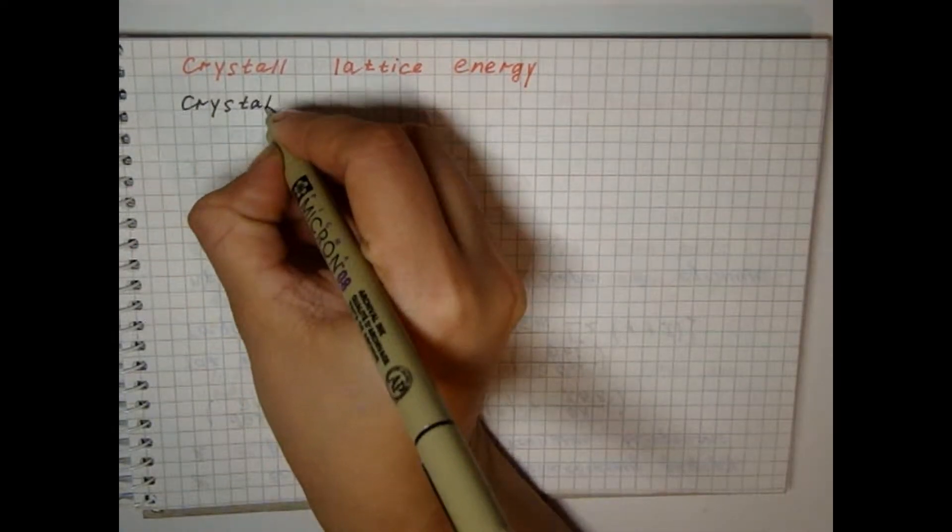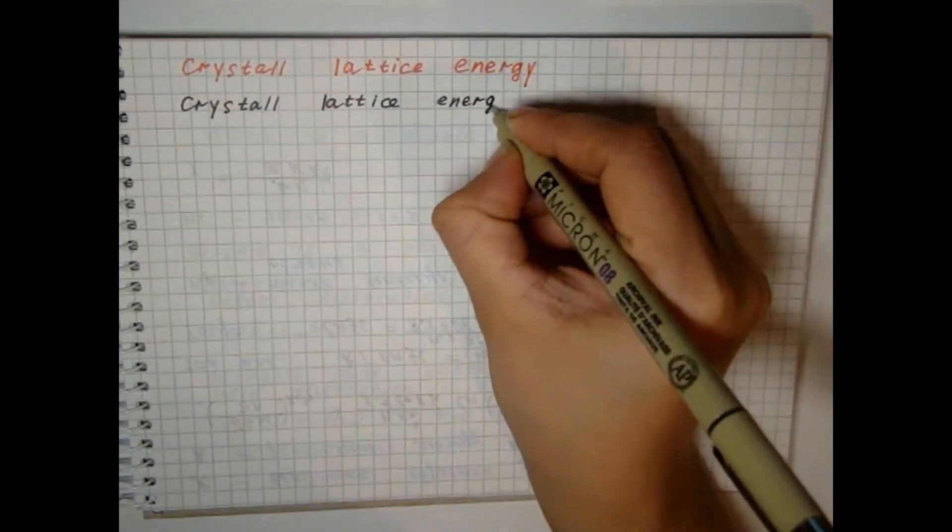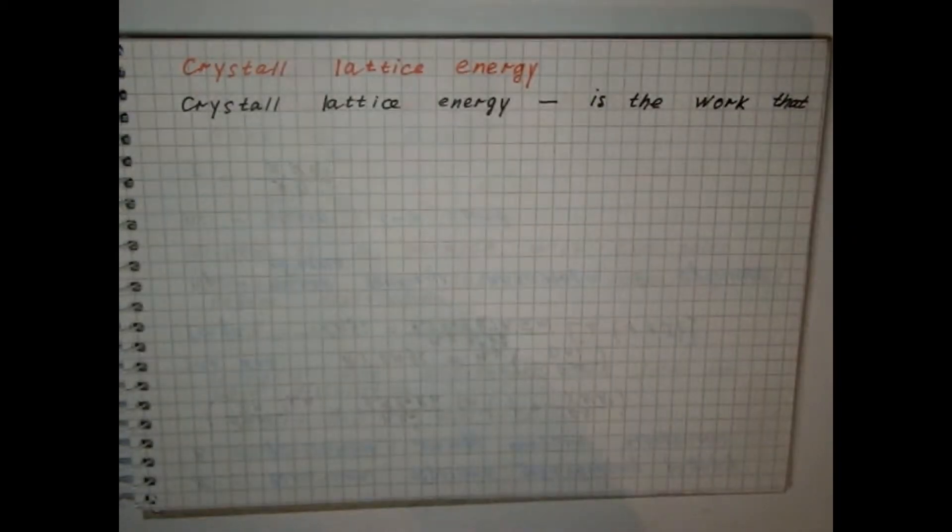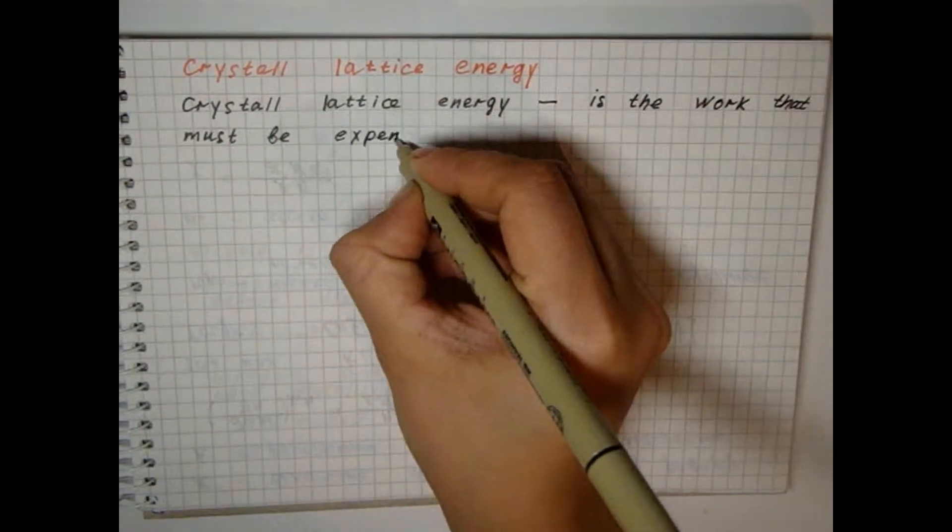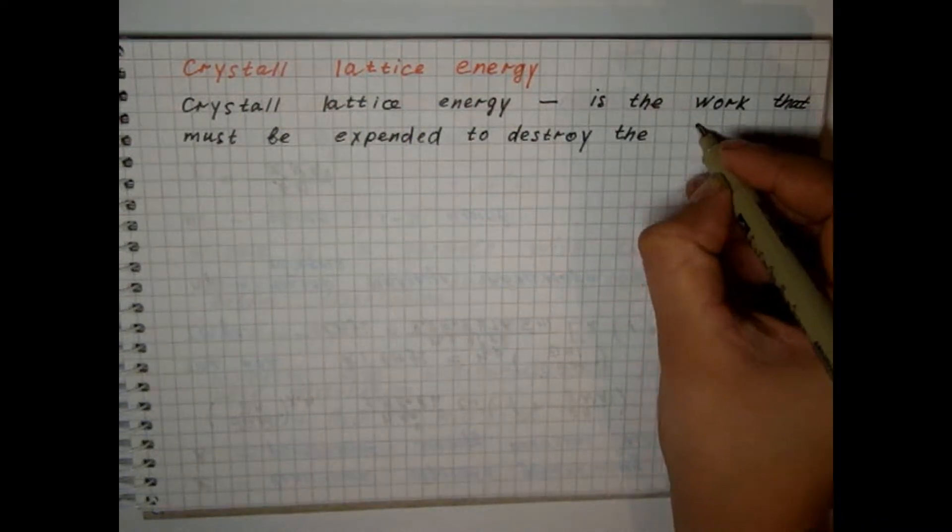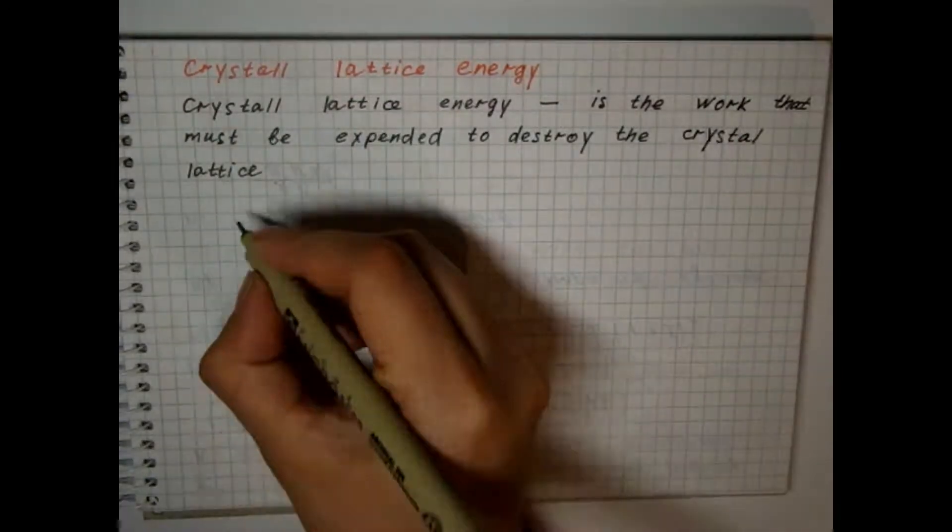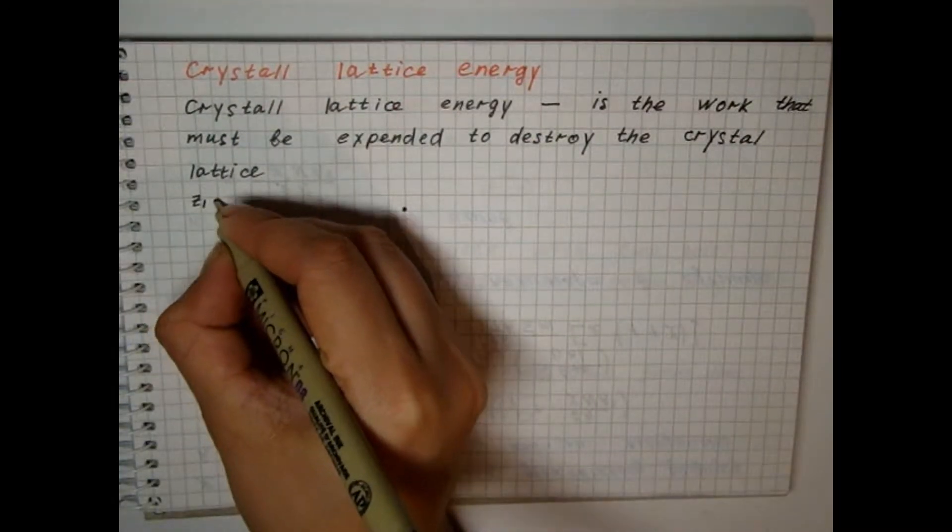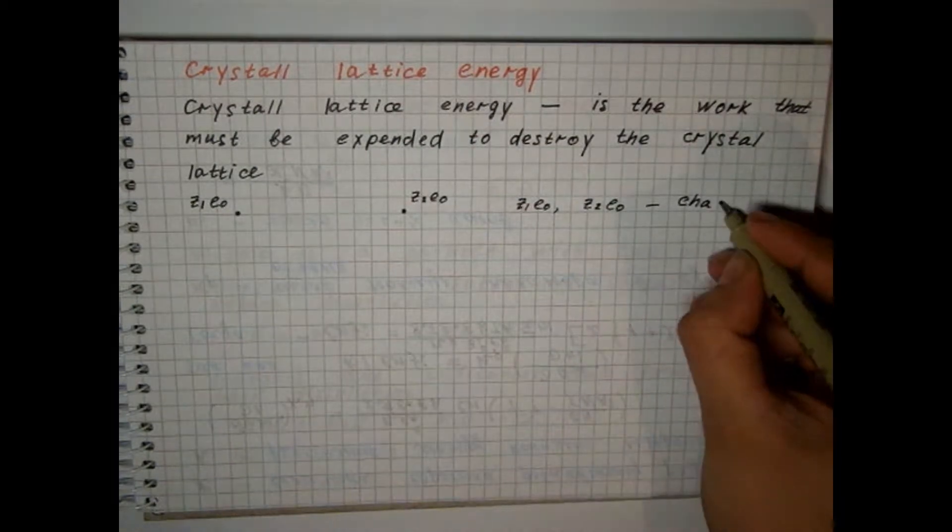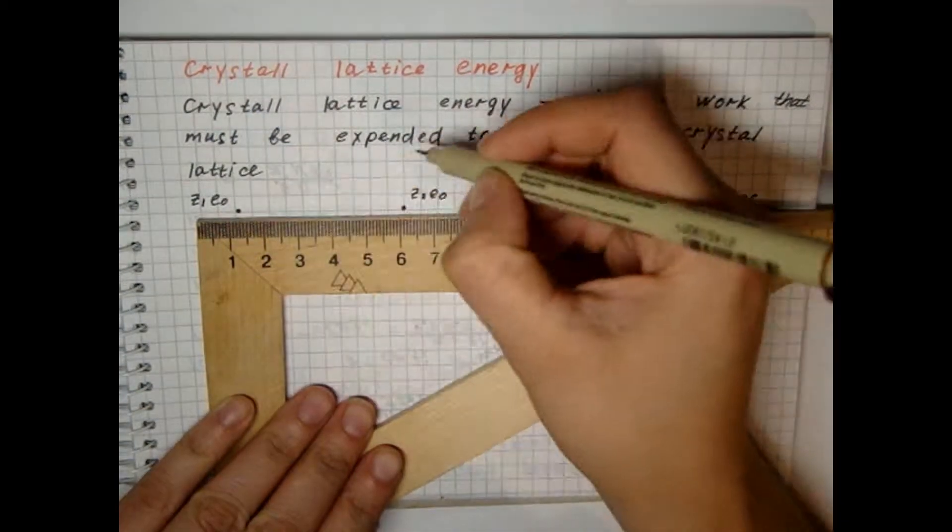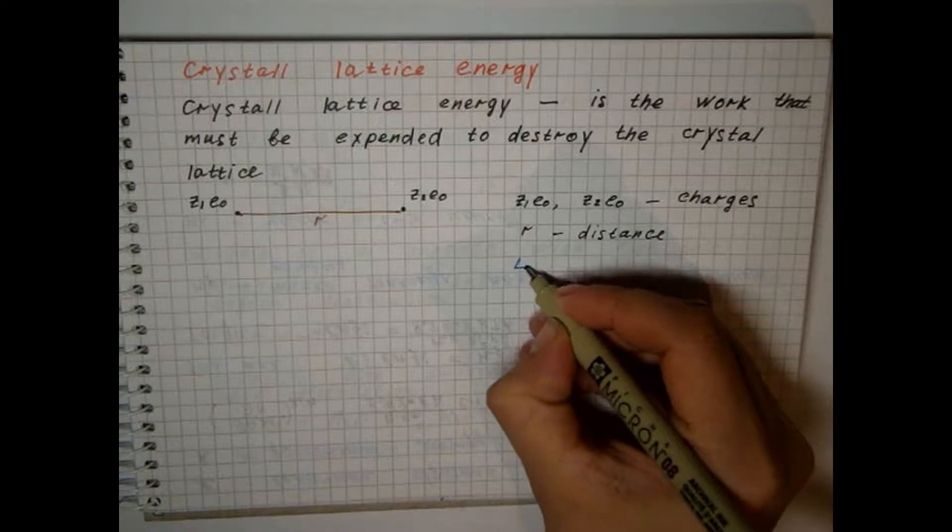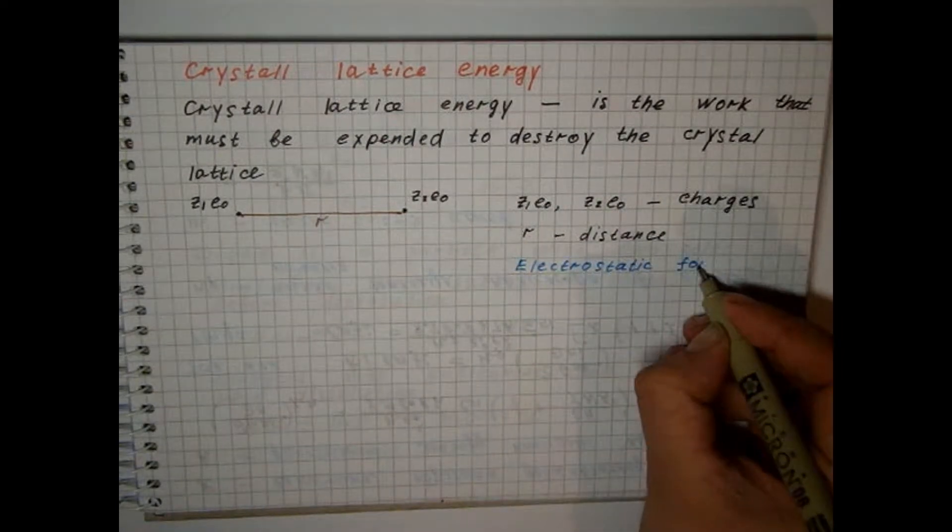The energy of the crystal lattice is the work that must be expanded to destroy the lattice. To estimate this energy, we use the Born model method. Let's consider two oppositely charged ions that the crystal lattice consists of. They have charges and are separated by a distance. Electrostatic interaction forms between these ions can be determined by Coulomb's law.